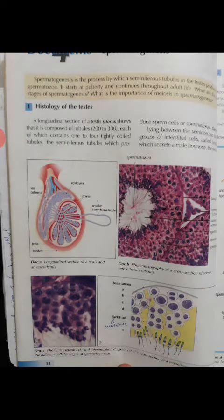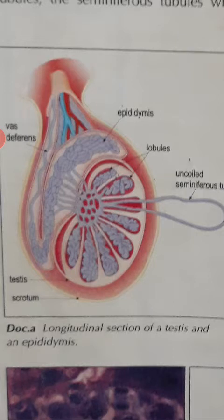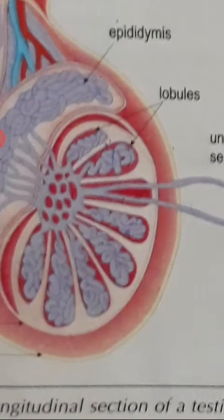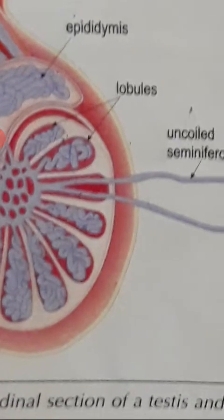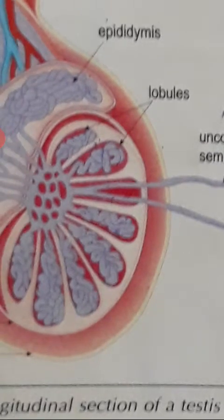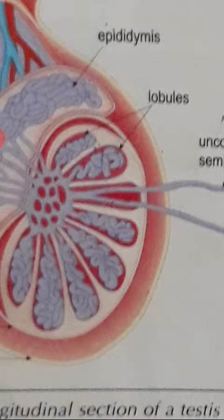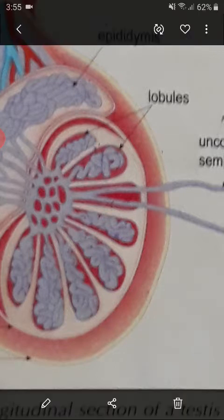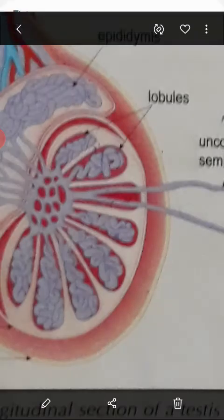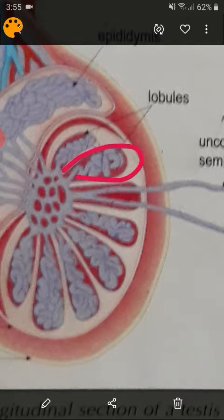Spermatogenesis starts inside the testicles. If we observe the testicle, it is made up of many rooms called lobules. Inside each lobule we have coiled tubules called seminiferous tubules. For example, this is a lobule, and inside each lobule we have coiled seminiferous tubules.